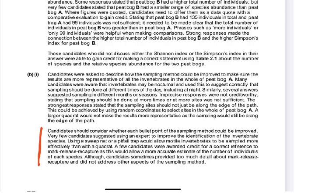From the exam report: candidates should consider whether each bullet point of the sampling method could be improved. Using a sweep net or a pitfall trap would allow motile invertebrates to be sampled more effectively than a quadrat. Mark-release-recapture would also allow for a more accurate estimate of the number of individuals of each species.